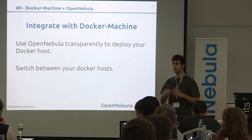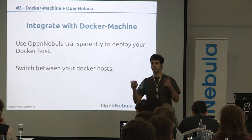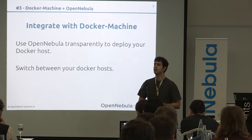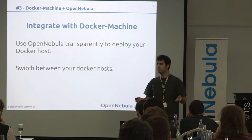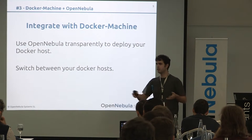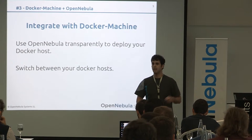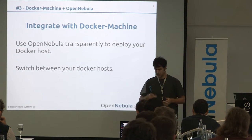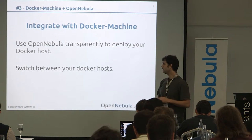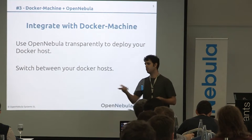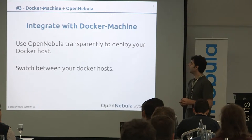Docker Machine is a tool created by the Docker team that allows you to deploy these Docker virtual machines or hosts, and it integrates with lots of providers. So imagine you have a small company and don't have enough resources to buy a server to install the Docker engine — you can simply ask Docker Machine to deploy a new Docker VM in Amazon. It also allows you to mix providers, so you can have one VM in Amazon, another in Azure, and one in OpenNebula.